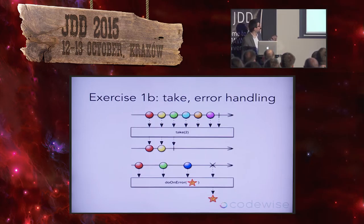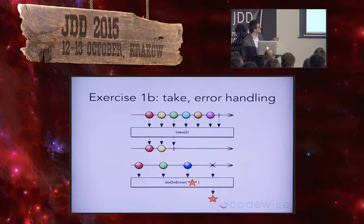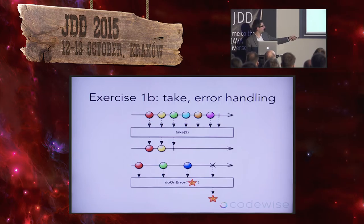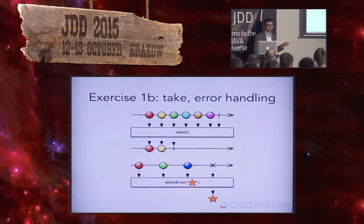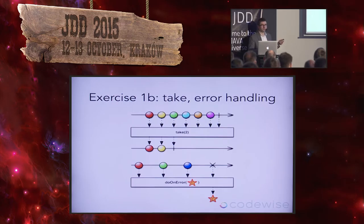The first approach is just logging the error. When there is an error, this method is executed. There's also the 'take' operator — this marble diagram shows that if we call take(2), it will take only two elements and call onComplete. So if we know there's an error on the first tweet, we can limit our stream to only one or two first elements to avoid hitting that error.